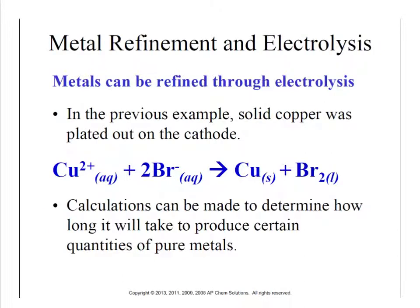This process is actually used industrially to refine metals. You can't just find a chunk of pure copper in the ground — it's mixed with other things. A way to purify copper is to take a copper-containing compound like copper bromide and use electrolysis to generate that copper metal. It can then be melted down, turned into wires or sheeting, and sold. A very common calculation involves determining how long it would take to deposit a certain amount of pure metal on an electrode.